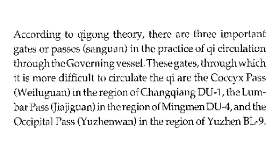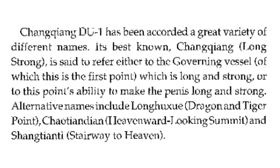According to Qigong theory, there are three important gates or passes in the practice of qi circulation through the governing vessel. These gates through which it is more difficult to circulate qi are: the coccyx pass in the region of DU1, the lumbar pass in the region of Mingmen DU4, and the occipital pass in the region of bladder 10. DU1 has been recorded with a great variety of different names. Its best-known name, Long Strong, is said to refer either to the governing vessel of which this is the first point — which is long and strong — or to this point's ability to make the penis long and strong. Alternative names include Long Bush, Dragon and Tiger point, Heaven Wide Looking Summit, and Stairway to Heaven.